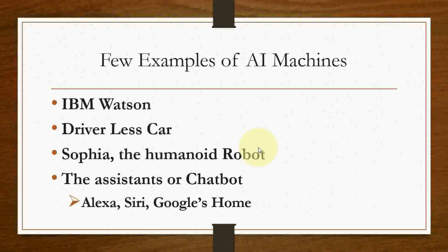Finally, a few examples of AI: IBM Watson, driverless cars, Sophia the humanoid robot, and AI assistants or chatbots. Chatbot examples include Alexa, Apple's Siri, and Google Home. I will post related video links in the description for further learning. If you liked this video, give a thumbs up, comment your doubts, and if you're visiting my channel for the first time, please subscribe and press the bell icon for more updates. Thank you for watching.